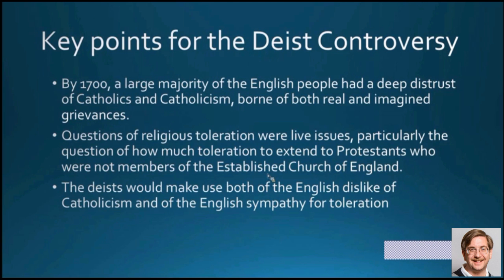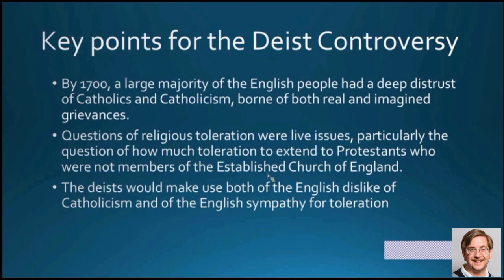So why is all this important? By the year 1700, a large majority of English people had a deep distrust of Catholics and Catholicism — some grievances were real, like the Gunpowder Plot with Guy Fawkes; others were imagined, like the Popish plot fabricated by Titus Oates. Questions of religious toleration were live issues — how much toleration should be extended to Protestants who weren't members of the Church of England? The deists would make use of both factors: the English dislike of Catholics and the English sympathy for toleration, attacking Christianity by attacking Catholicism and seeking toleration for themselves by appealing to English principles of toleration.